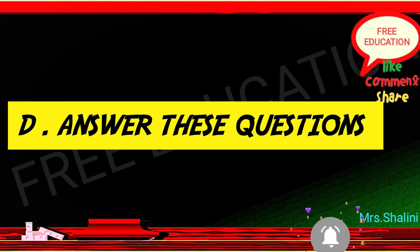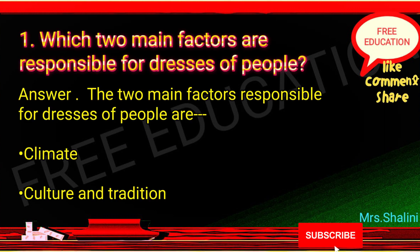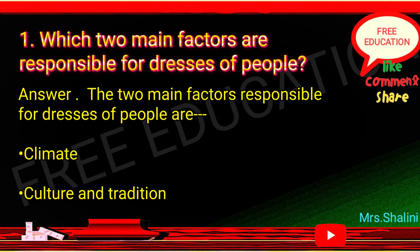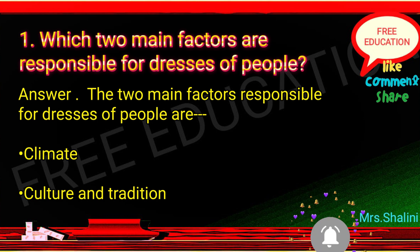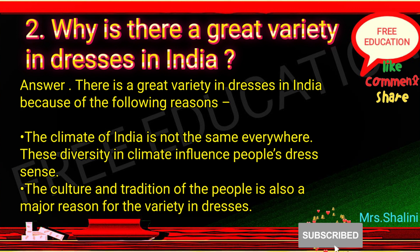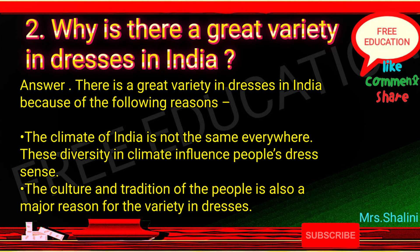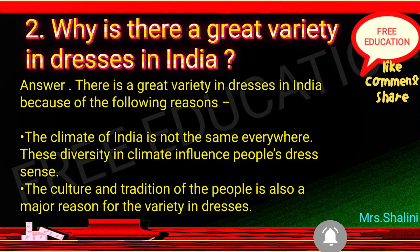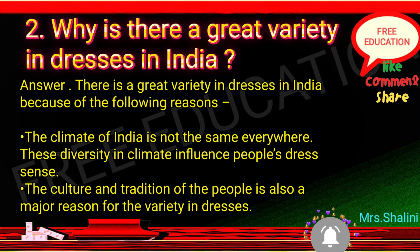Next, Question D: Answer these questions. Question 1: Which two main factors are responsible for the dresses of people? Answer: The two main factors responsible for dresses of people are: 1. Climate, and 2. Culture and Tradition. Question 2: Why is there a great variety in dresses in India? Answer: There is a great variety in dresses in India because the climate of India is not the same everywhere. This diversity in climate influences people's dress sense. The culture and tradition of the people is also a major reason for the variety in dresses.